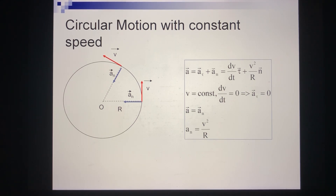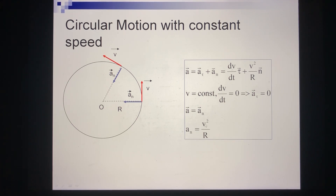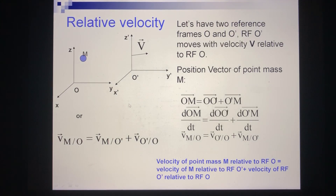Therefore, for circular motion with constant speed, we just focus on the normal acceleration. Normal acceleration is defined by the formula a_n = v²/r, where v is the speed of motion and r is the radius of the trajectory.